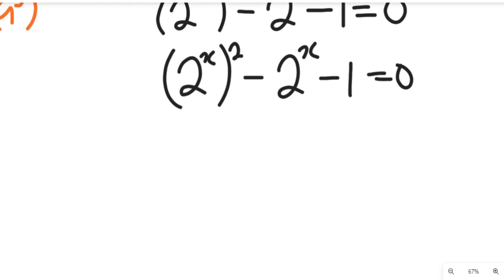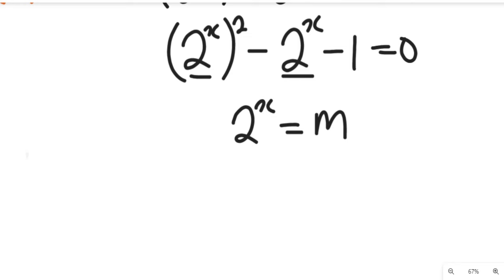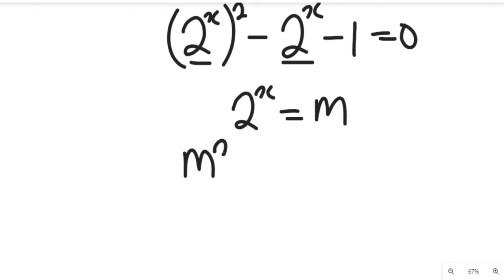From this expression we can see that 2 to the power of x is a repeated term. So we let 2 to the power of x equal to m. If we substitute that in, the expression will automatically give us m squared minus m minus 1 equal to 0.